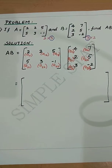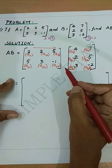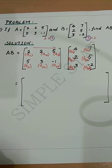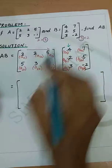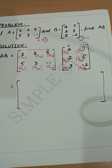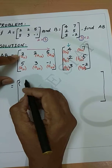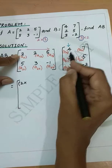The first step is to consider the first row and multiply with the elements in the first column. Now consider the first row with the first column. The first row first column element is 2, so we get 2×4...